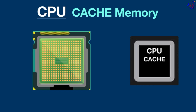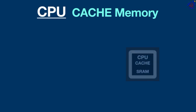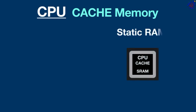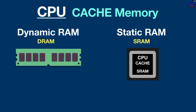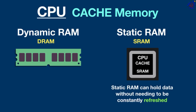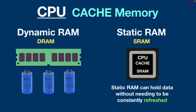Computer memory comes in different types. Cache memory is a form of static RAM or SRAM, while regular system RAM is known as dynamic RAM or DRAM. Static RAM can hold data without needing to be constantly refreshed, which makes SRAM ideal for cache memory. DRAM uses capacitors to store data and these capacitors need to be constantly refreshed with electricity in order to save data.